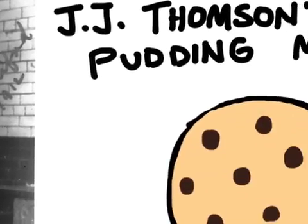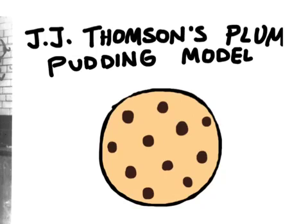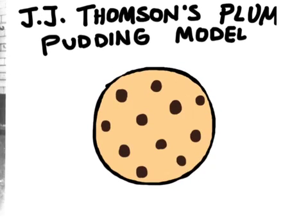Before we get to Rutherford's experiment, let's just quickly revisit J.J. Thompson's plum pudding model. This was the model at the time of Rutherford's experiment, and it was the accepted model. Now, plum pudding is a British dessert, and I've never had it. I don't know what it looks like. So I'm going to call this the chocolate chip cookie model.